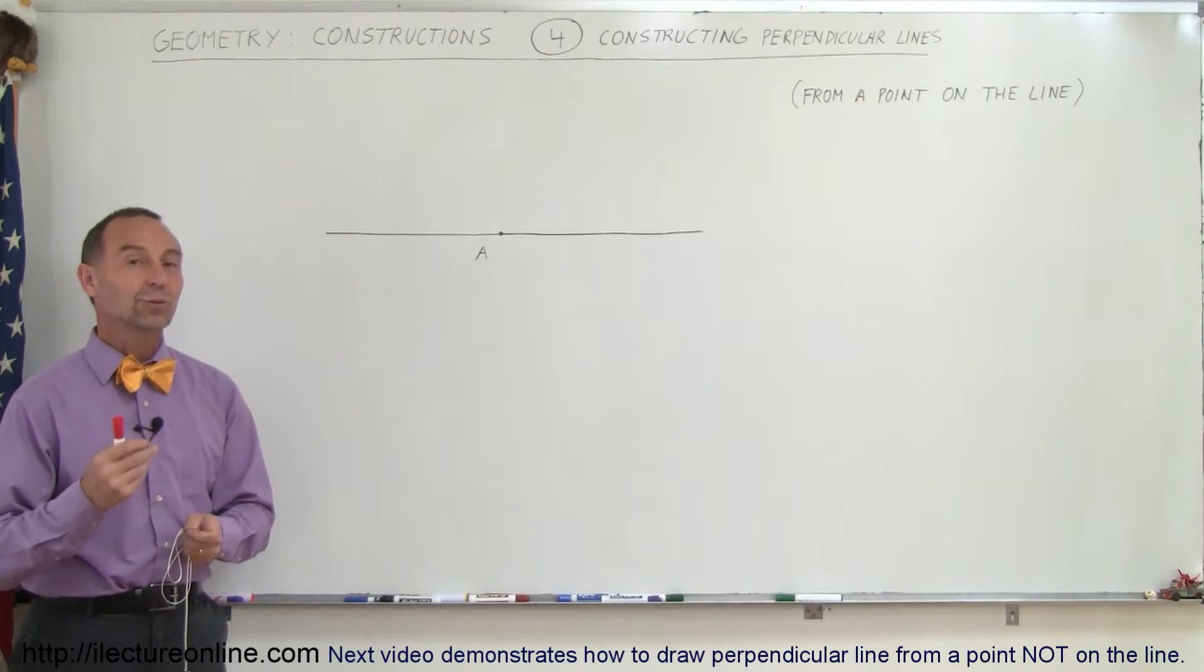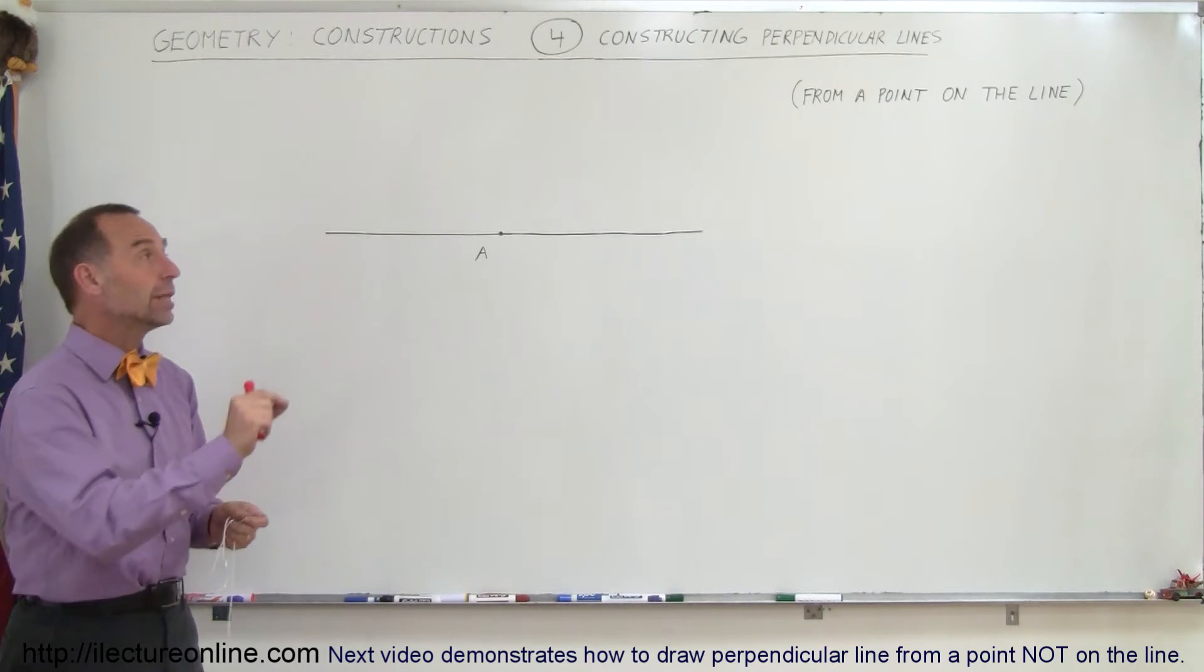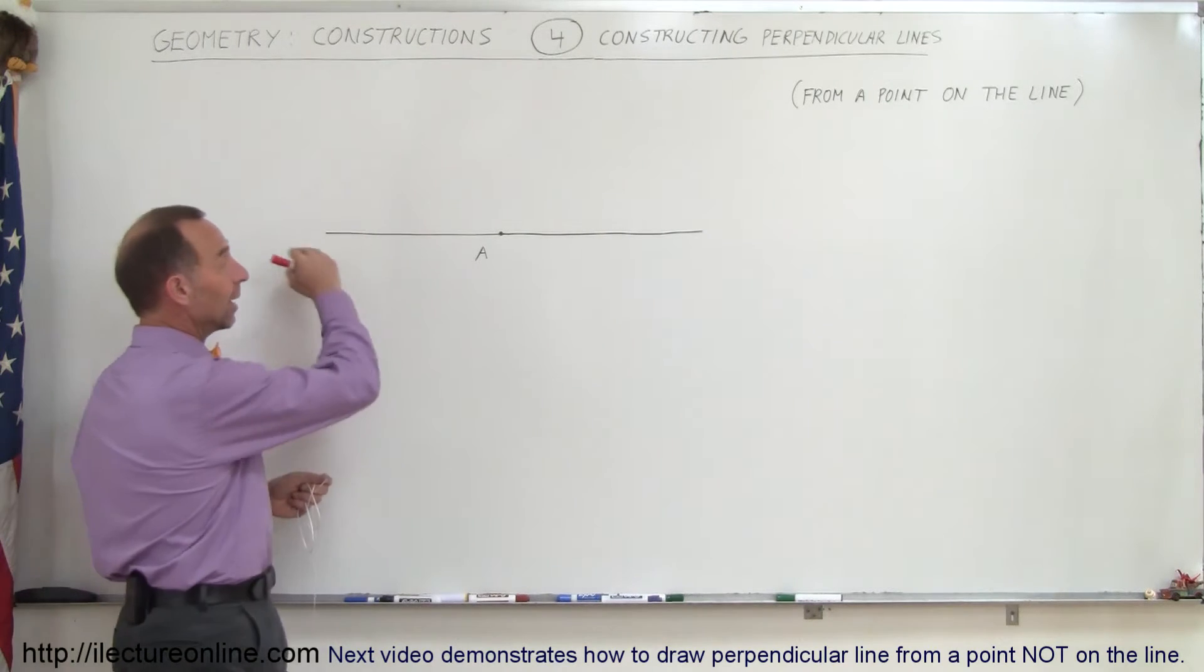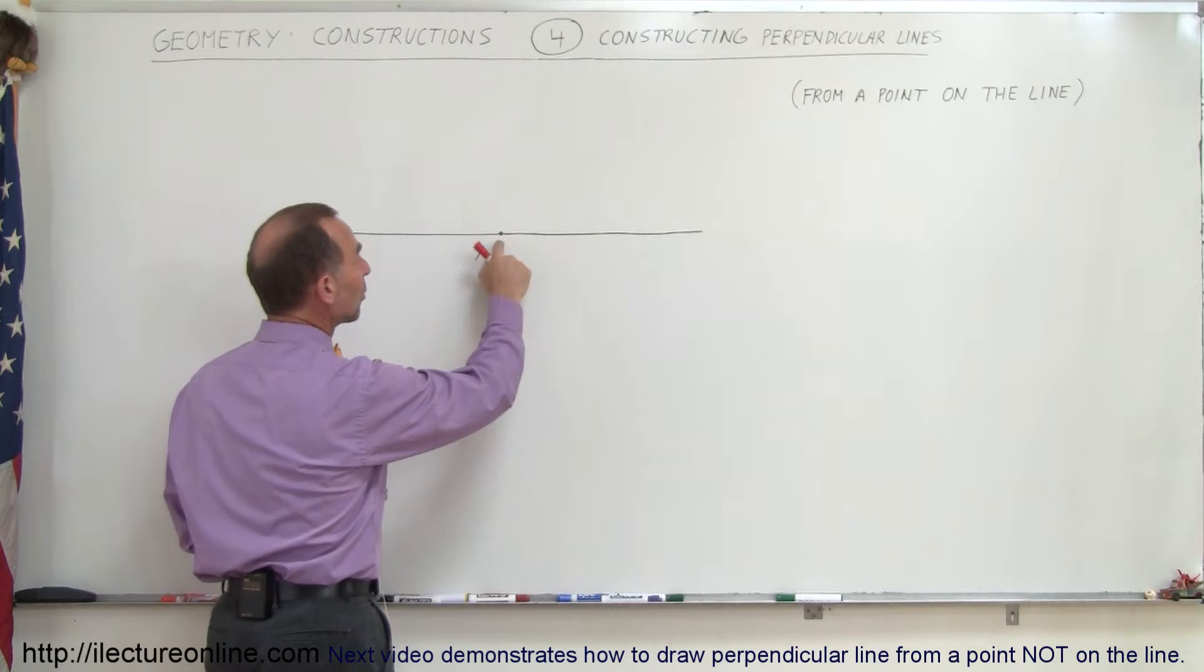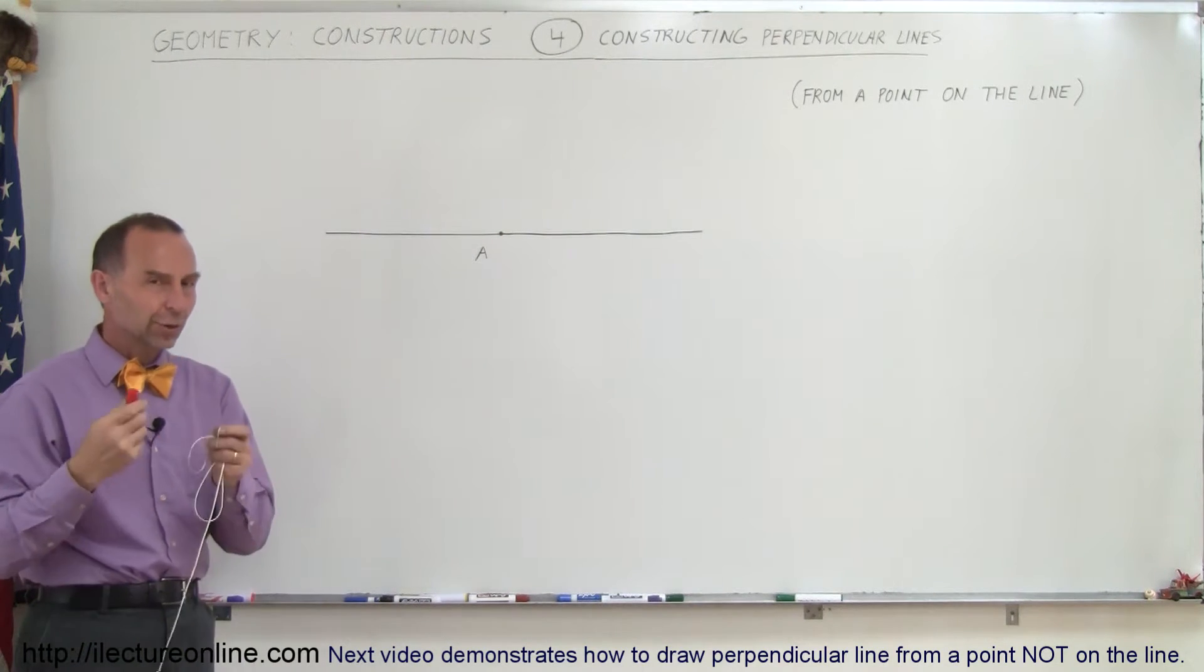Welcome to Electron Line. How do we draw a line perpendicular to another line at a particular point on the line? Here we have a line, we have a point on the line, and we want to draw a line perpendicular to the first line that goes right through that point. How do we do that?